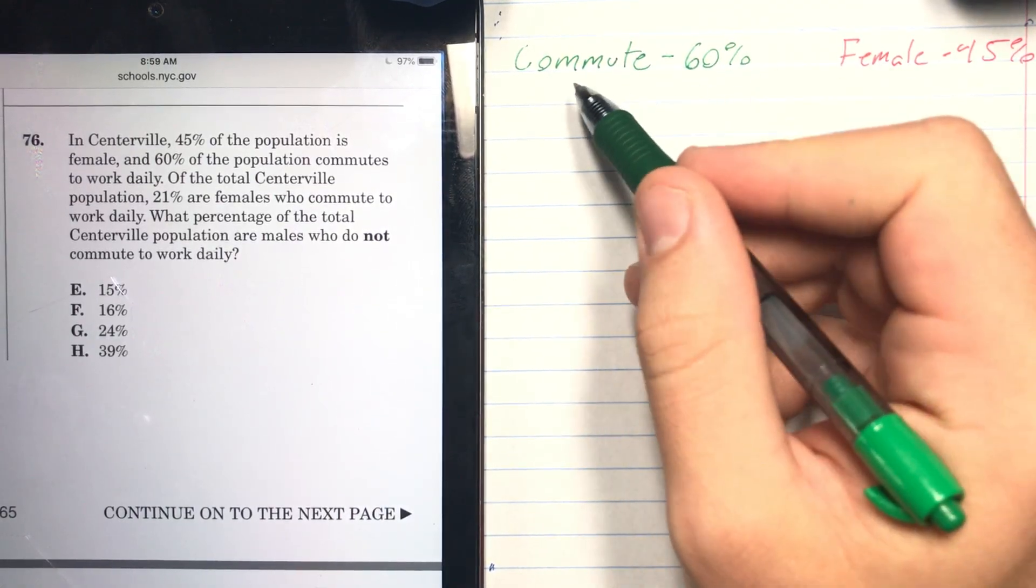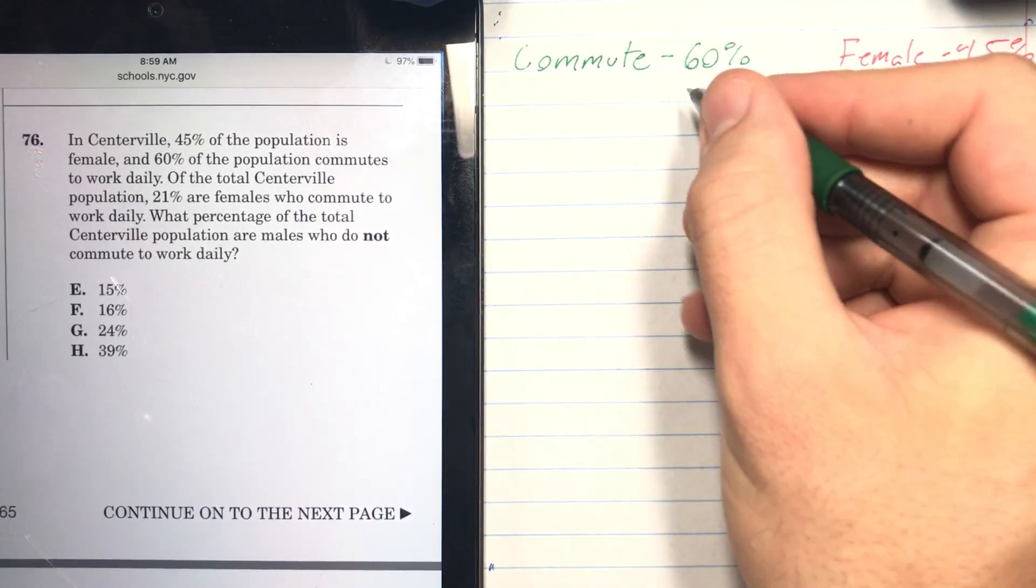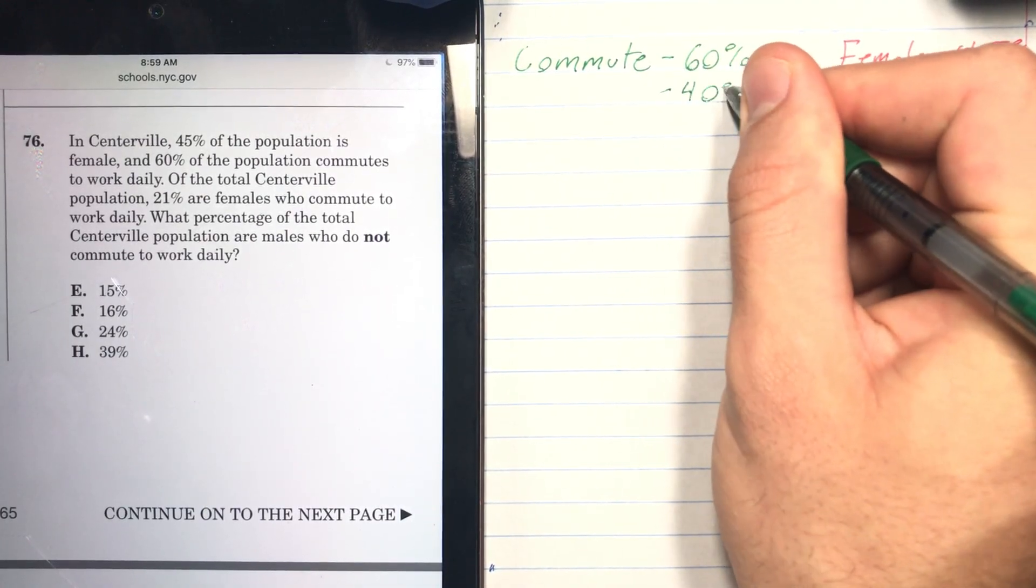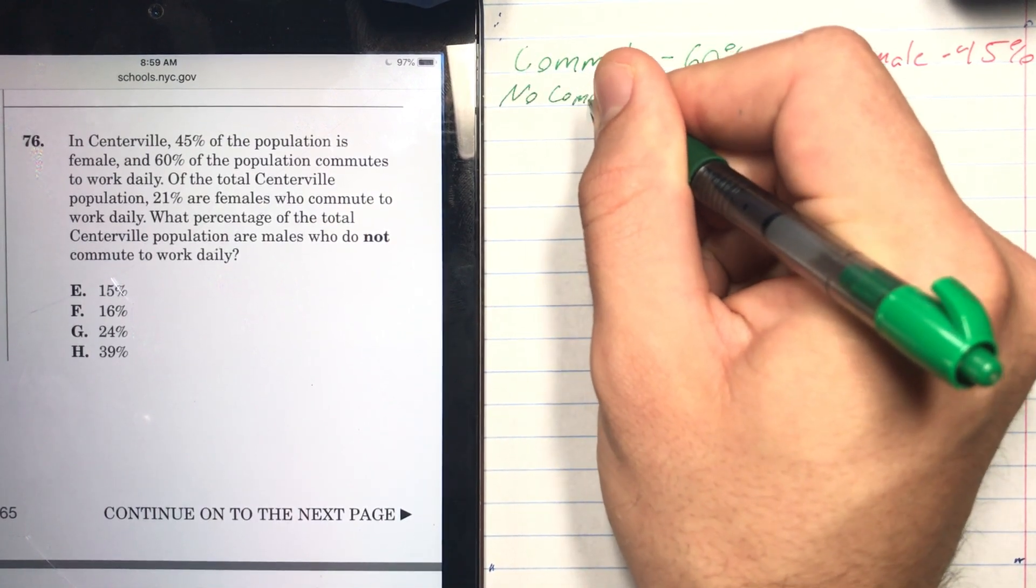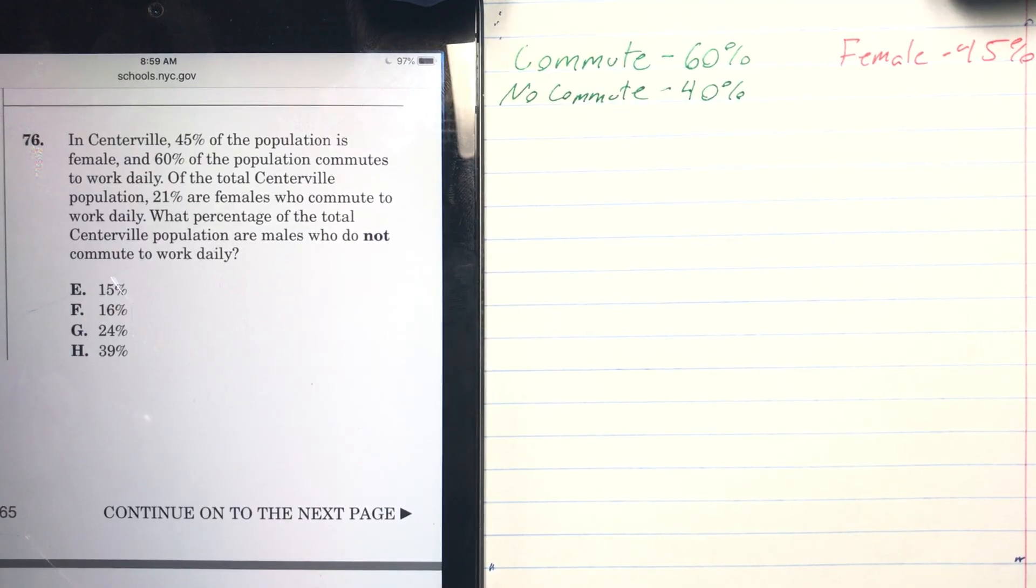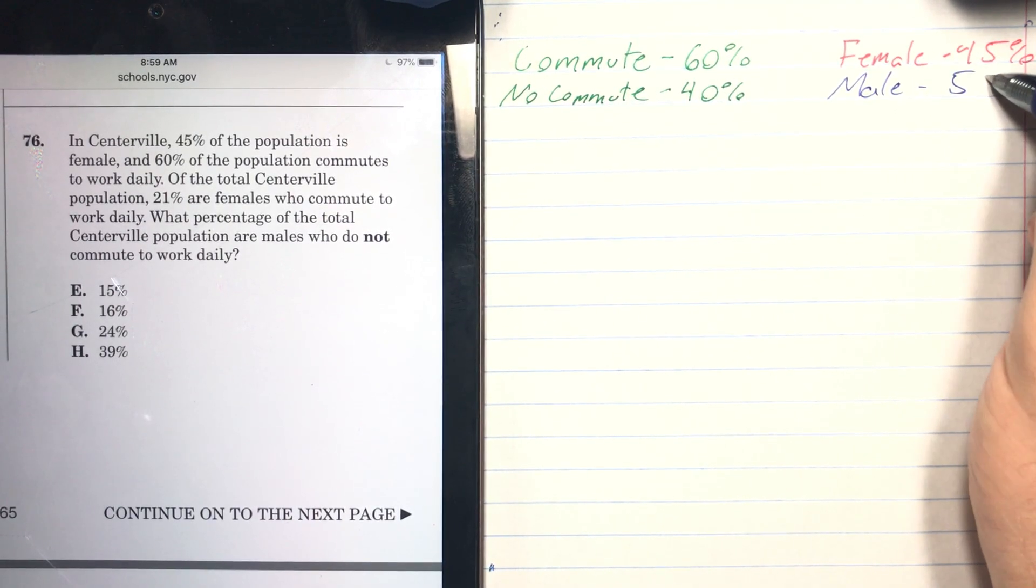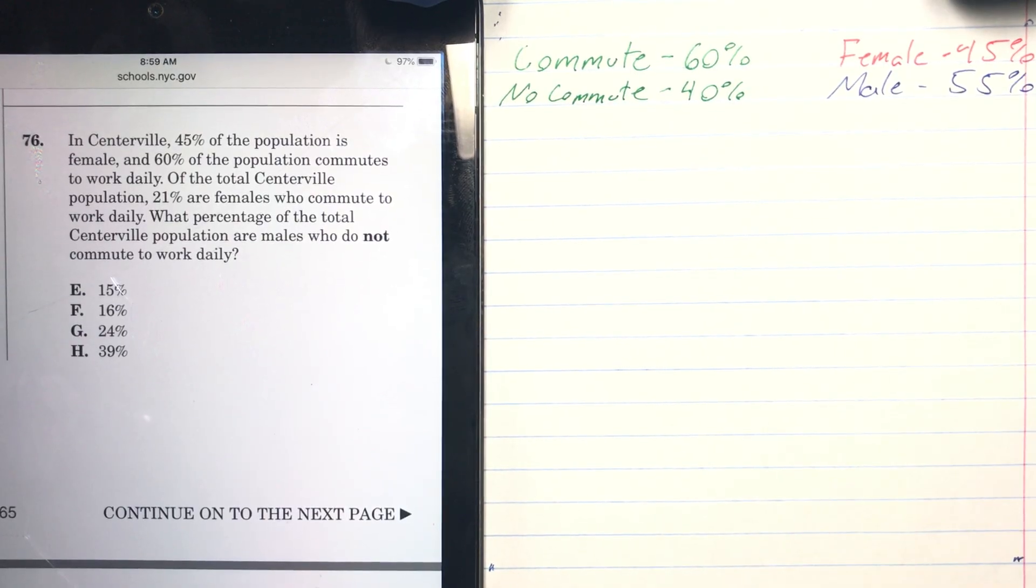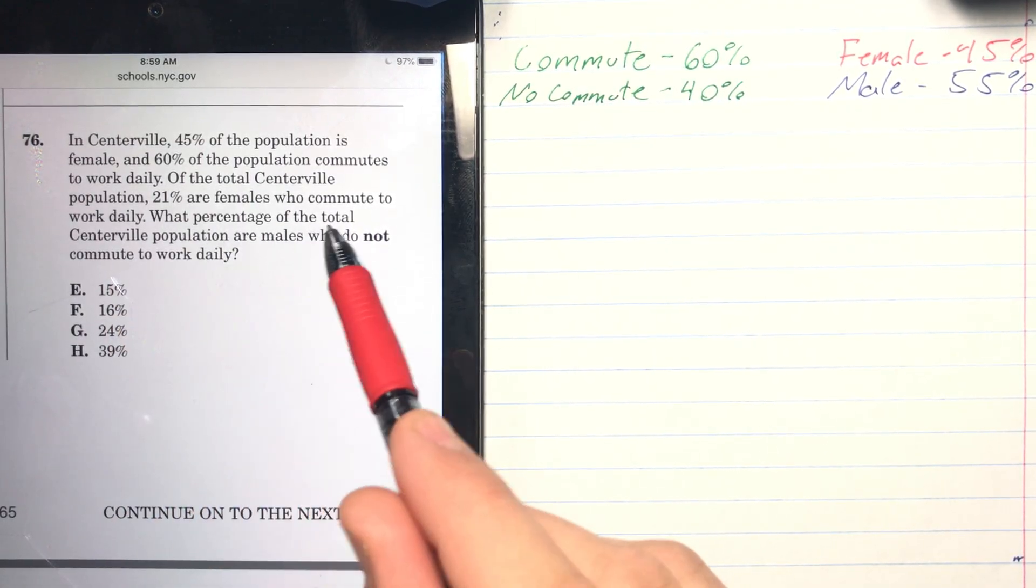One thing that we know is if 60% of the Centerville population commutes, that means that 40% don't commute. They either work from home or they don't have jobs. And if 45% of the population is female, then we can make the rational assumption that 55% of the population is male. Then they give us a last piece of information: 21% are females who commute to work daily.